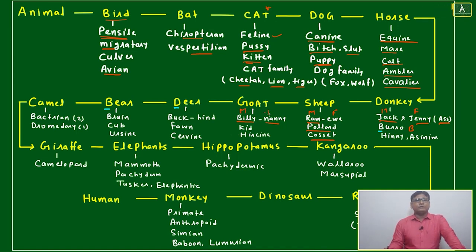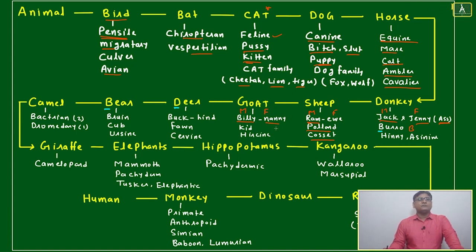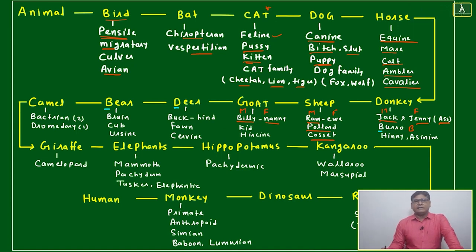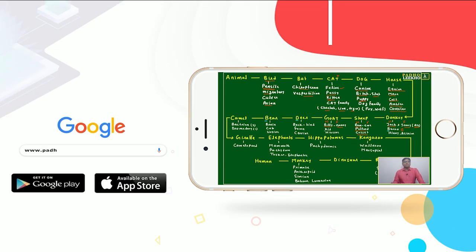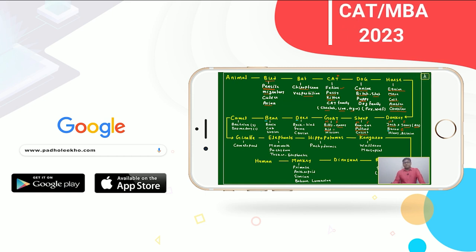Next is goat — billy is male goat, nanny is female goat. Nanny has another meaning too, but in this context nanny means female goat. Kid means baby goat.